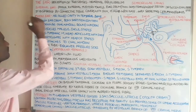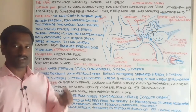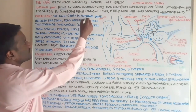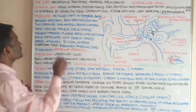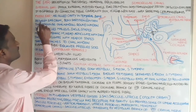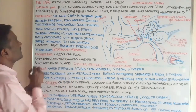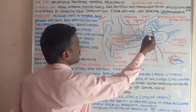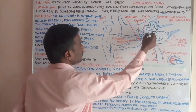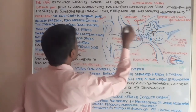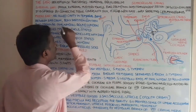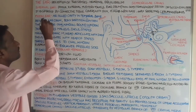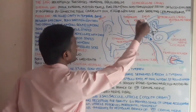The middle ear is an air-filled cavity located in the region of the temporal bone. It is situated between the eardrum and a bony partition that contains two openings: the oval window and the round window. By the help of the oval window, the middle ear opens into the inner ear.